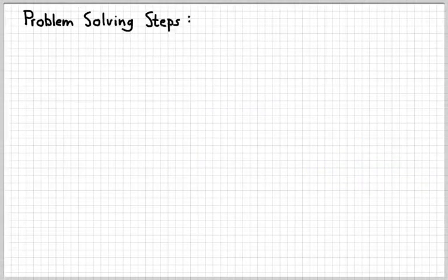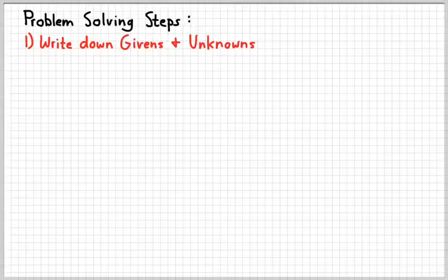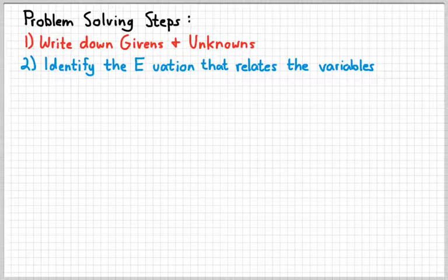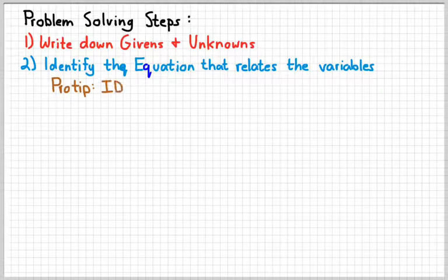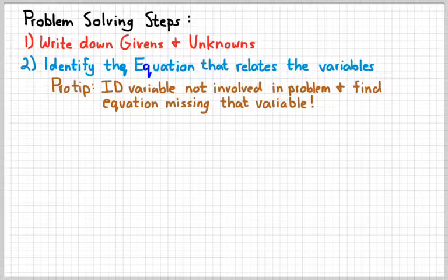So, let's go through a short problem-solving method. The first step in any problem involving a complicated thing like accelerated motion is to write down the things that you know, which we're going to call givens, and the things that you don't know, want to find out, which are called unknowns. Then, identify the equation out of all those equations that we just listed that relates those variables. The easiest way to do that is to identify the variable that's not involved in the problem and then find the equation that's missing just that variable.